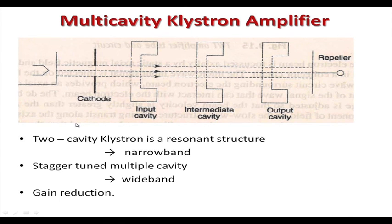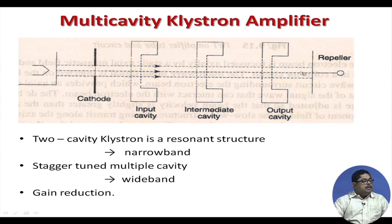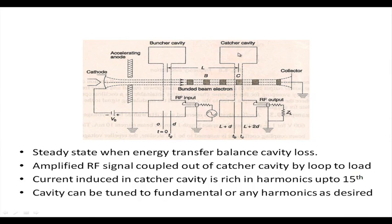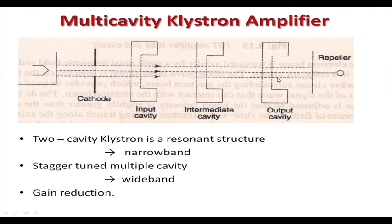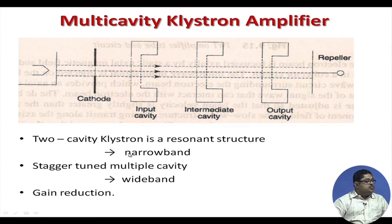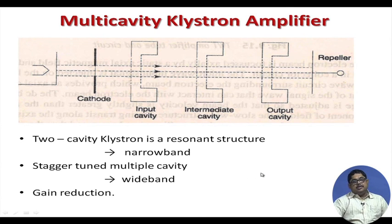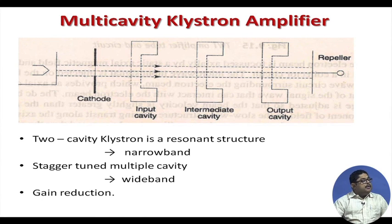To counteract this, the klystron has been improved. Instead of the two-cavity klystron, there is now a multicavity klystron with an input cavity, output cavity, and several intermediate cavities — stagger-tuned multiple cavities — which makes it wide band. However, increasing bandwidth reduces gain because the gain-bandwidth product remains constant. This is a good upgrade to the cavity klystron.